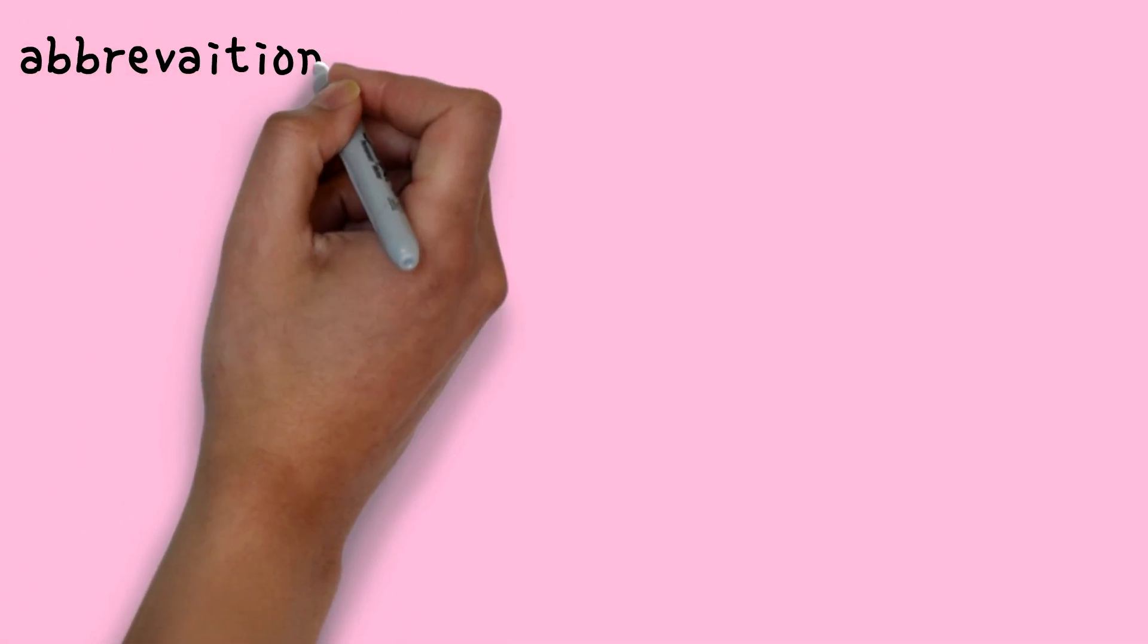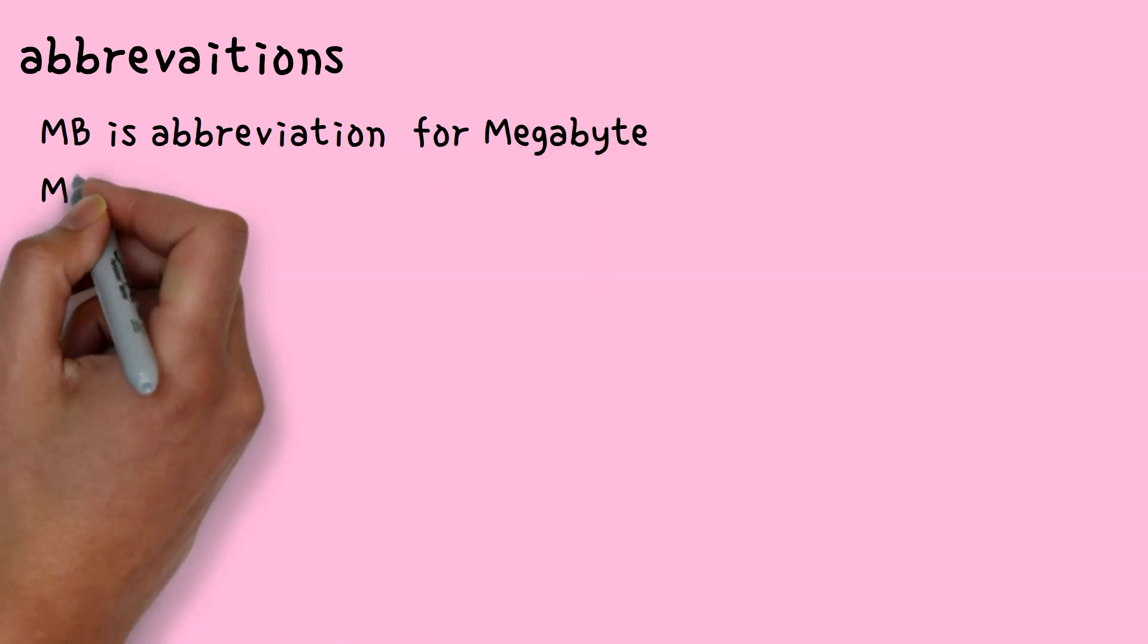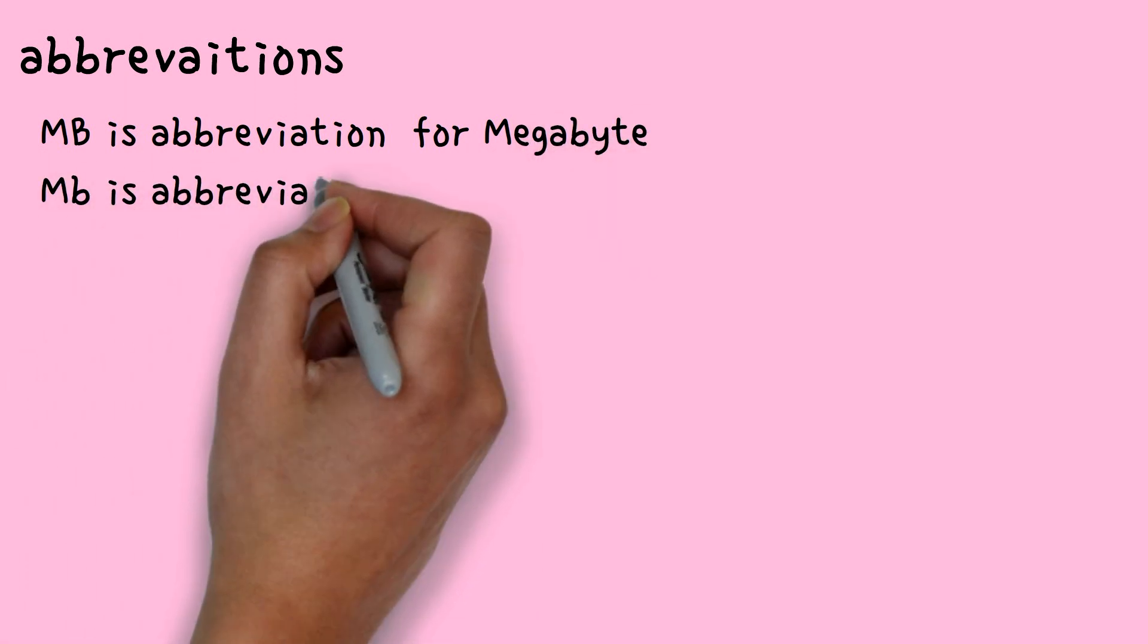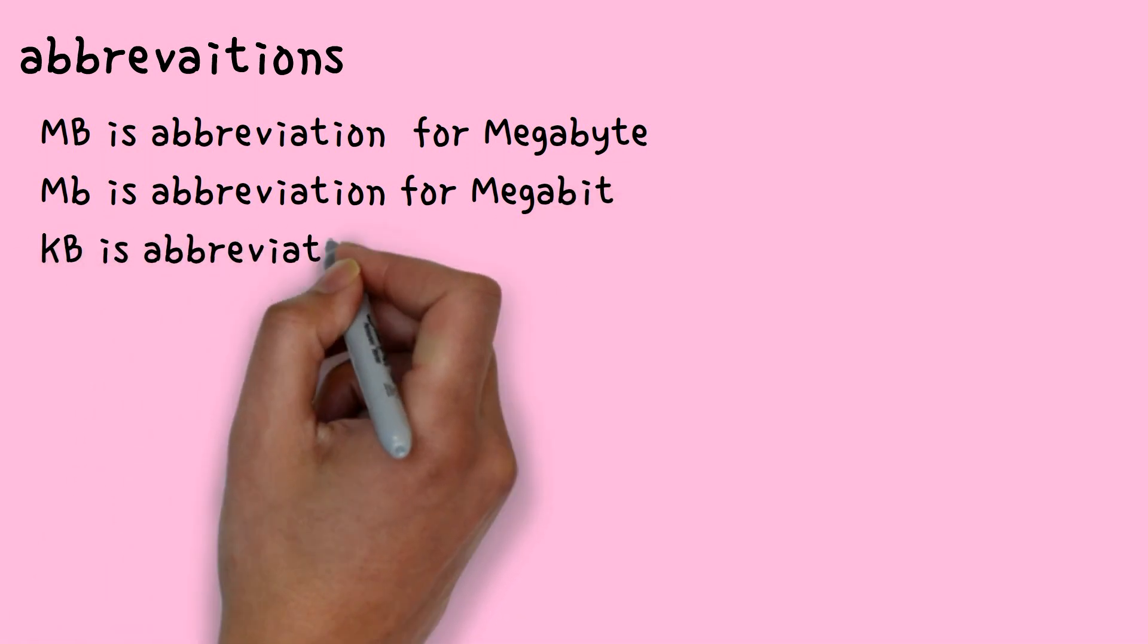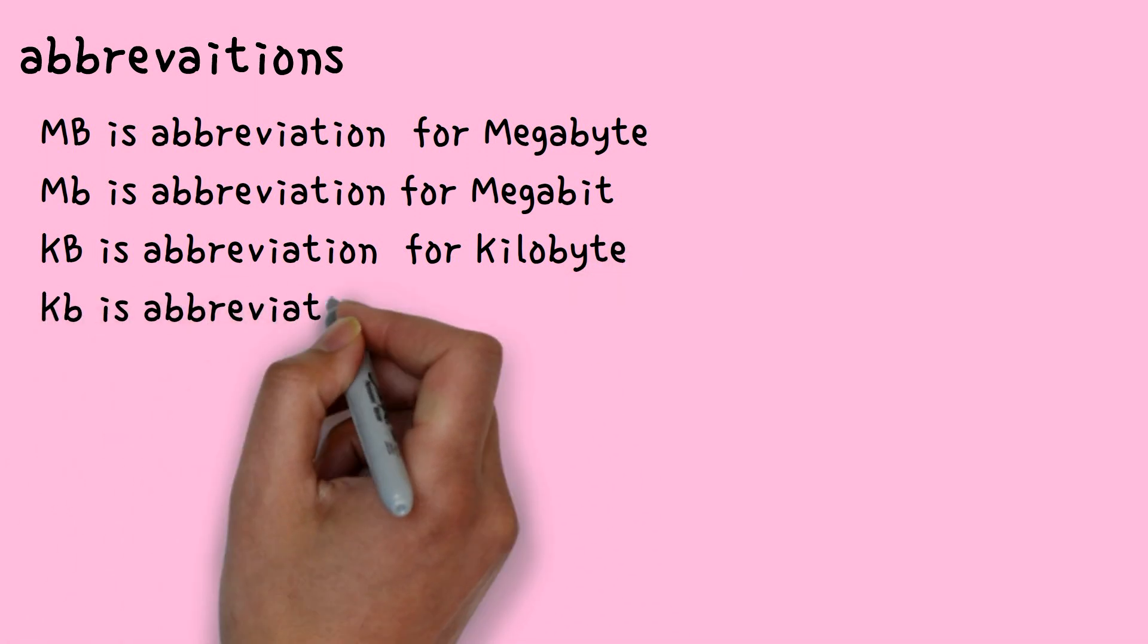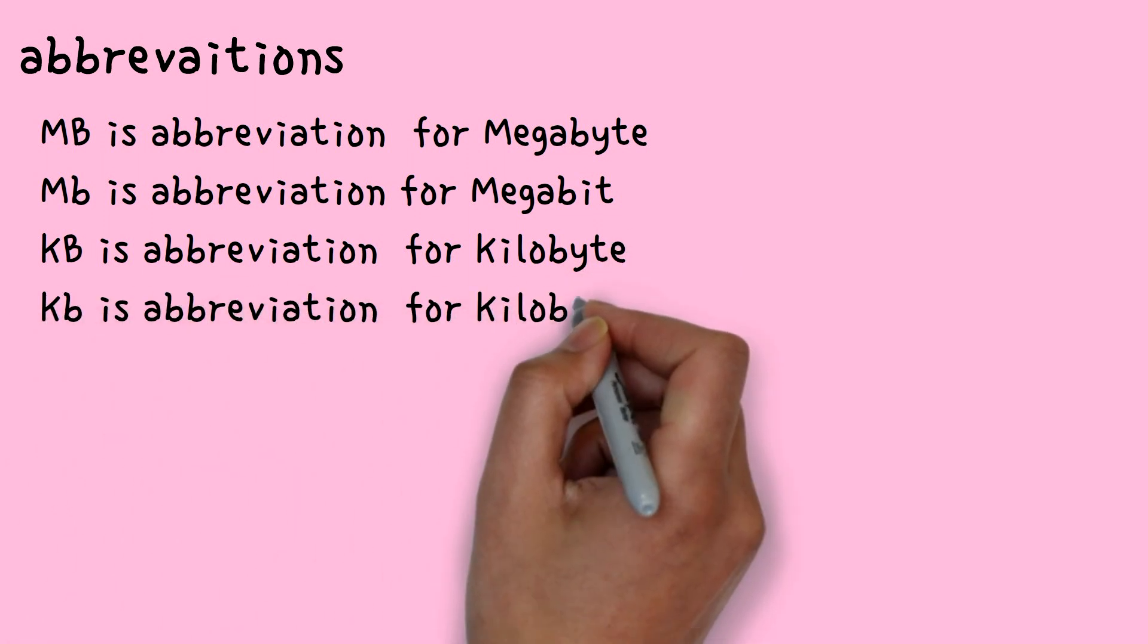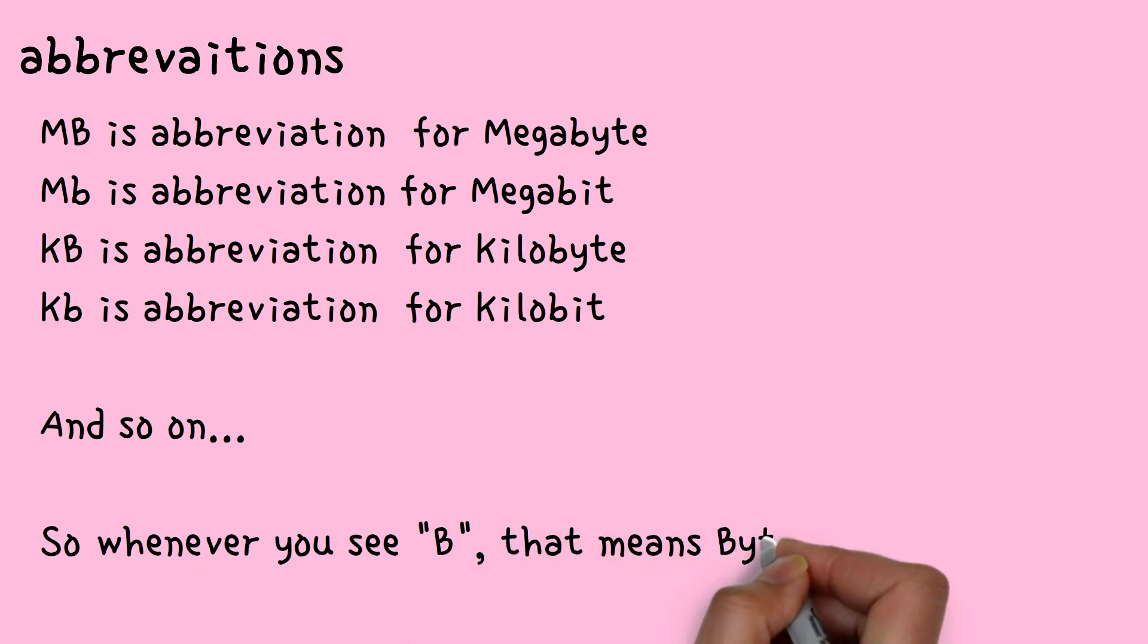Now, abbreviations. Capital MB is abbreviation for megabyte. Small mb is abbreviation for megabit. Capital KB is abbreviation for kilobyte. Small kb is abbreviation for kilobit, and so on. So whenever you see capital B, that means it's byte, and whenever you see small b, that means it's bit.